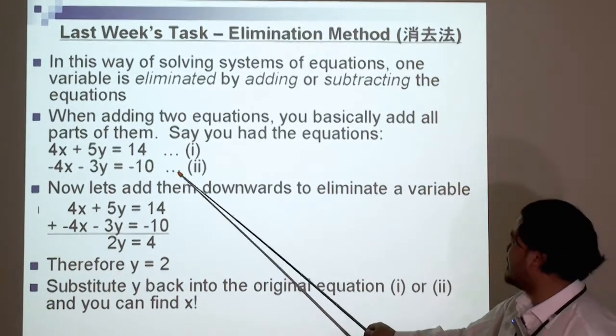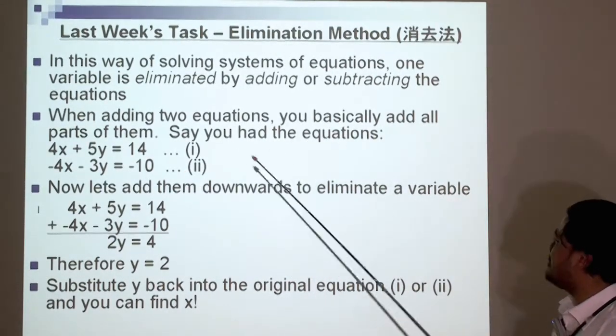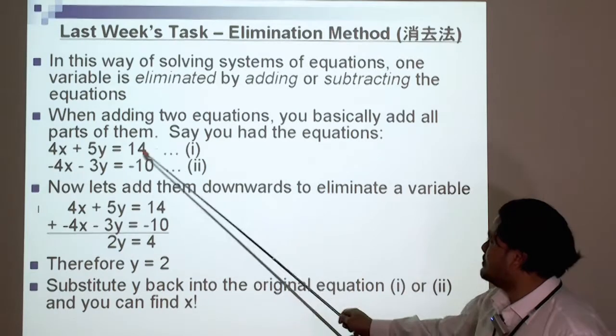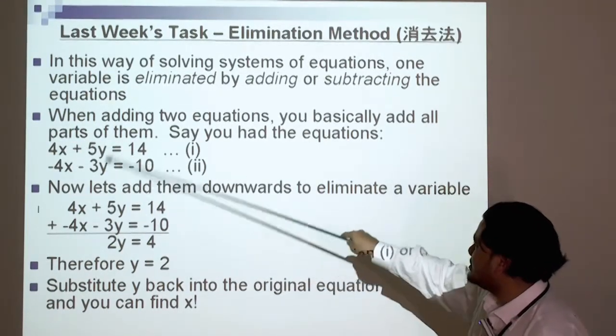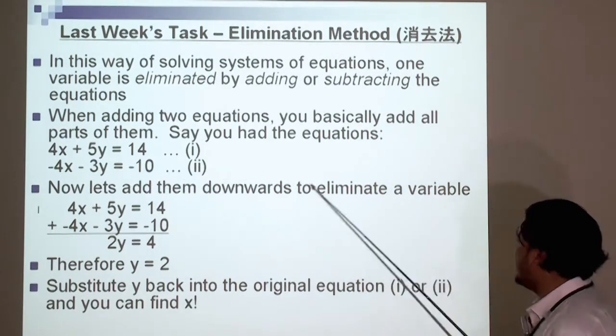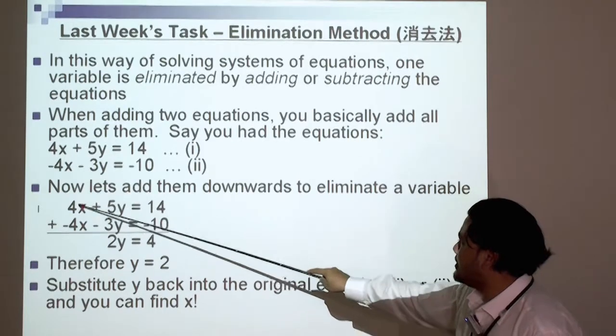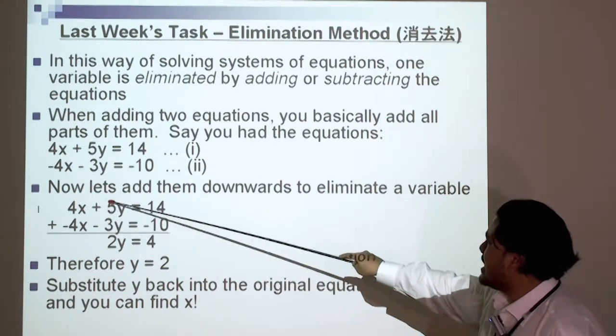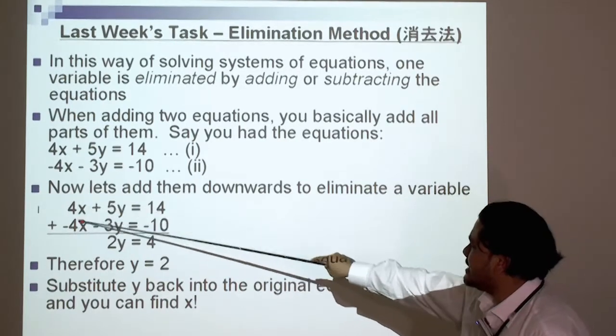Here's a simple example. When adding two equations, you basically add all parts of them. So what we're going to do here with these equations is we're going to either add or take away, going downwards, and we're going to eliminate a variable. So what we're going to do here is we're going to add, add going downwards.